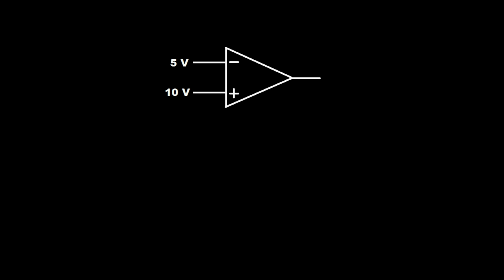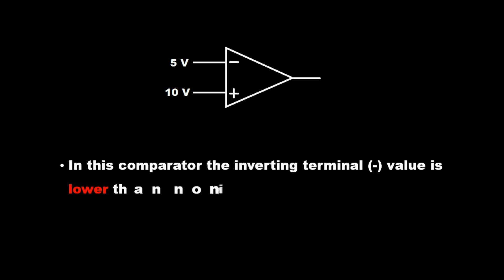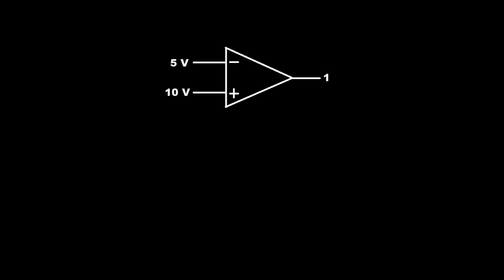In this comparator, the inverting terminal value is lower than the non-inverting (plus) terminal, so the output is high (1).